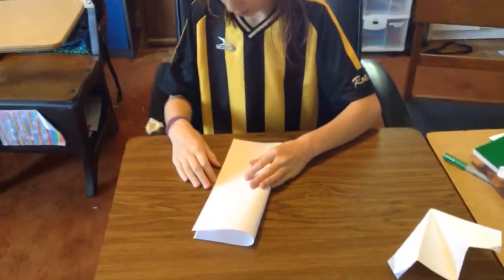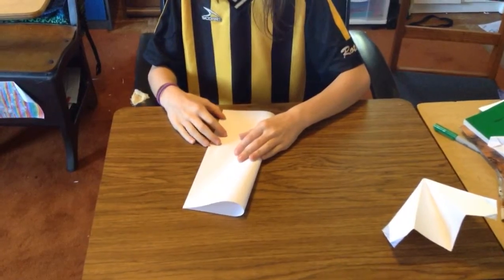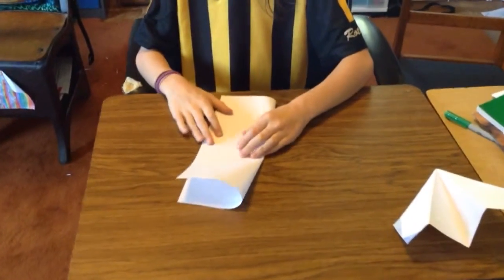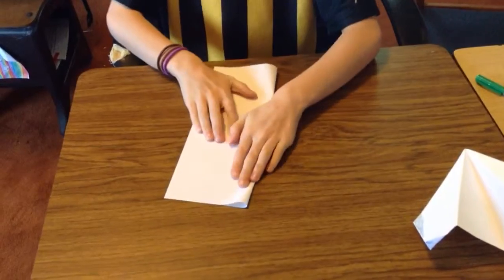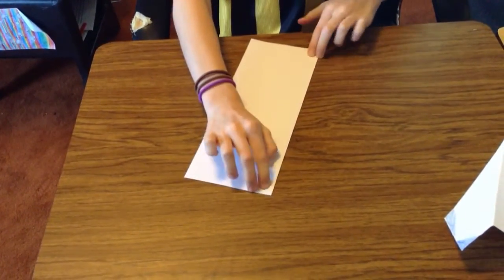First, you fold it in half. Make sure the edges are lined up, like this. Then you give a nice, strong crease and open it up.